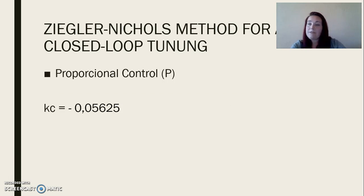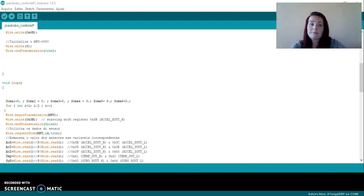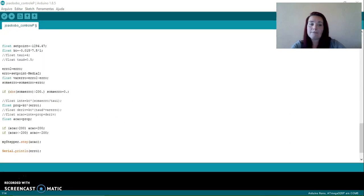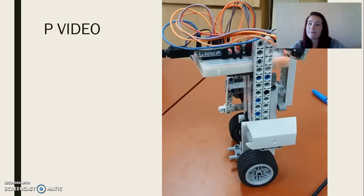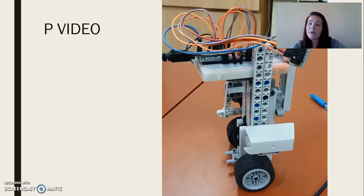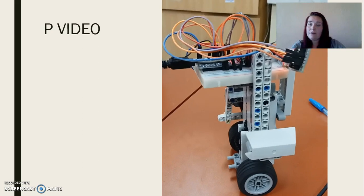By implementing the value of Kc shown on the screen, the proportional-pure control code was presented. It was observed that the robot remained at the set point in a satisfactory way, as seen in the video.